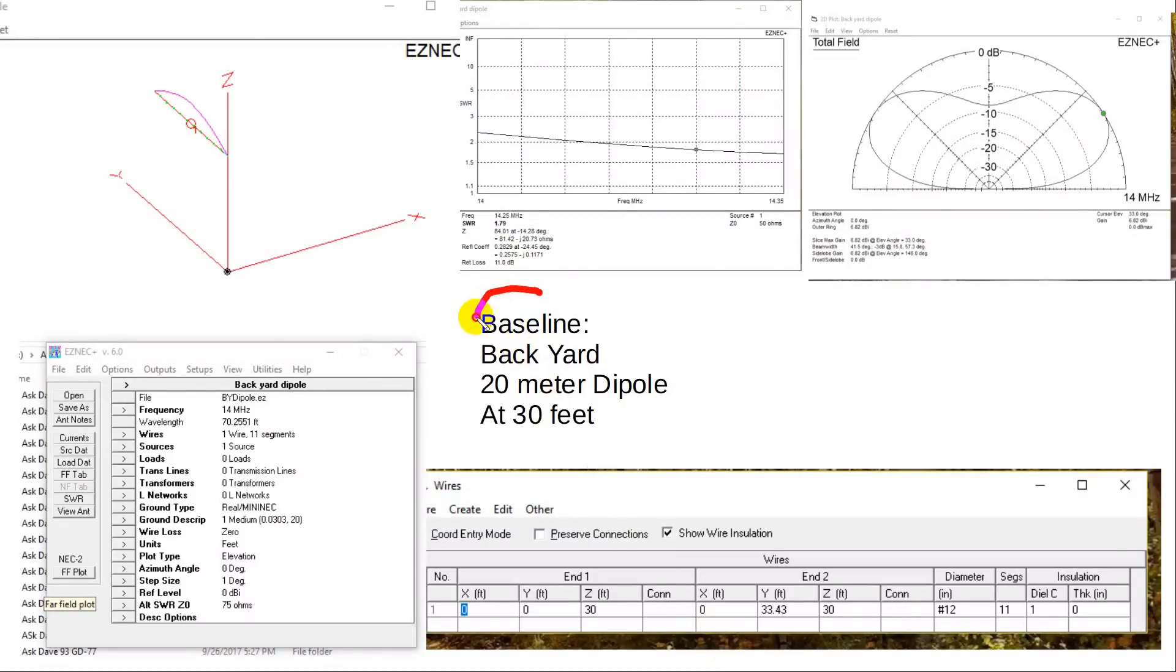This is the baseline case, a backyard dipole 20 meters. Sorry for the busy chart but everything's right here on one page. This is what the antenna looks like. X and Y are your ground. It's up at 30 feet right here. We see the Z is at 30 feet in both cases. And the Y length right here gives you the length of the dipole 33.43 feet of number 12 wire.